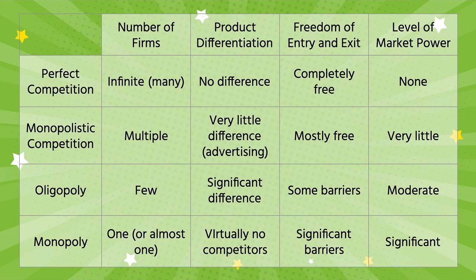There's nothing that keeps anybody from leaving that marketplace, which is why we say it's completely free for an individual or a firm to enter or exit. The type of product made in a perfectly competitive marketplace is virtually no different compared to another product in the marketplace — think of pumpkins at a grocery store. In a perfectly competitive market, one firm holds virtually no power over any other firm.